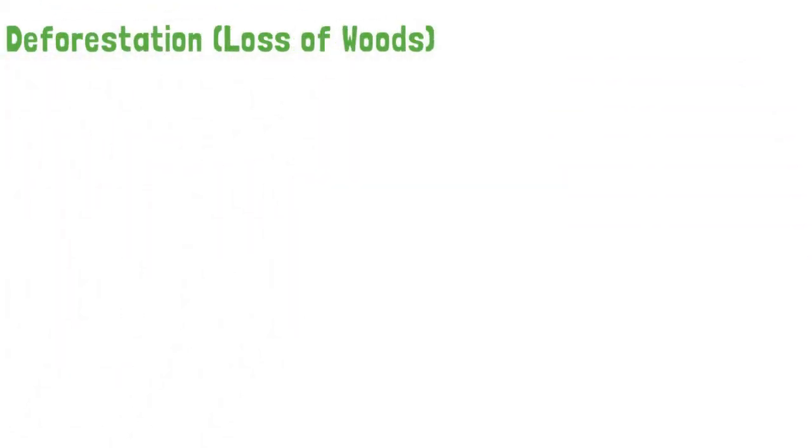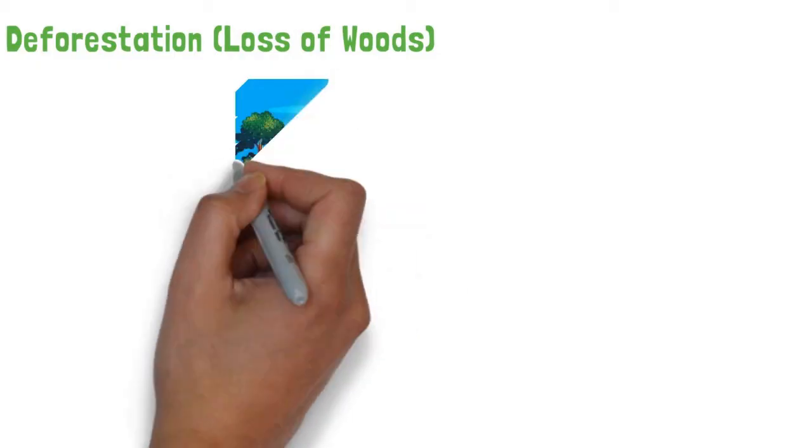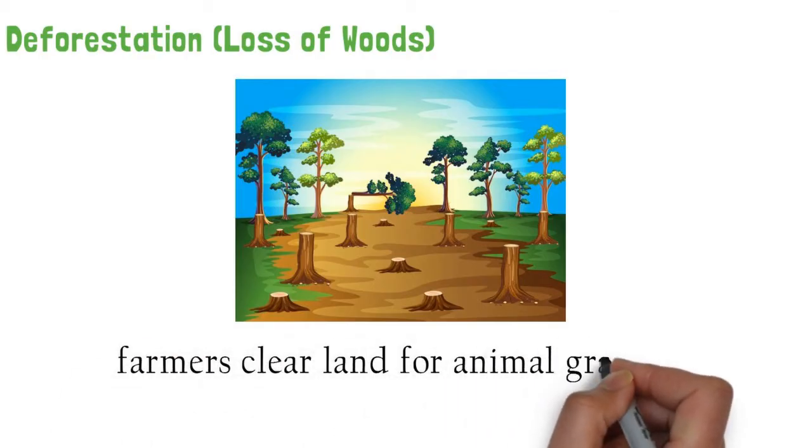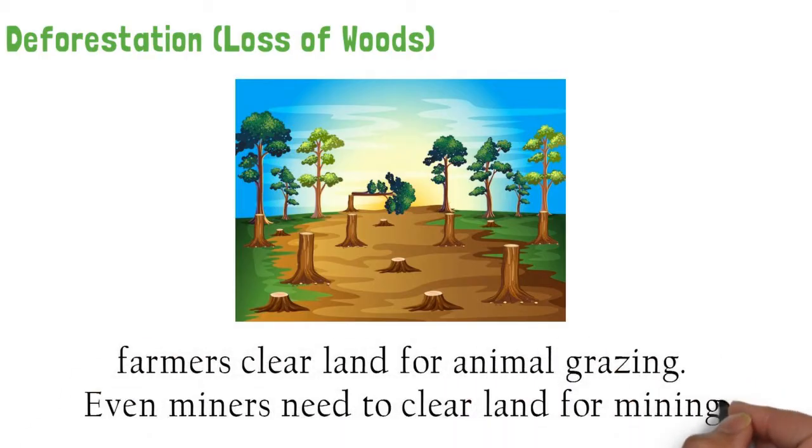Deforestation, or loss of woods. When people move into a panda's area, they clear forests for homes. Also, people make stores and other buildings. Next, farmers clear land for animal grazing. Even miners need to clear land for mining.